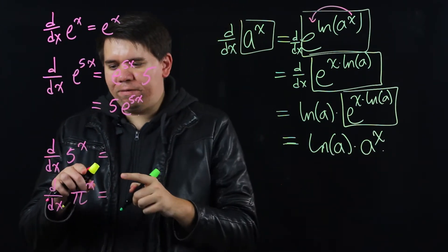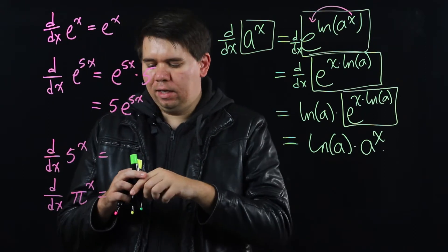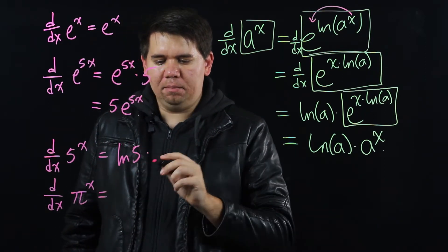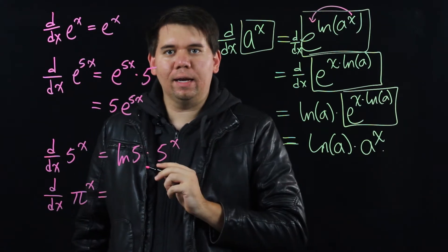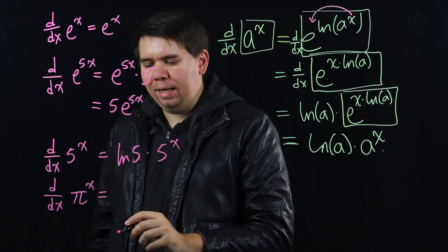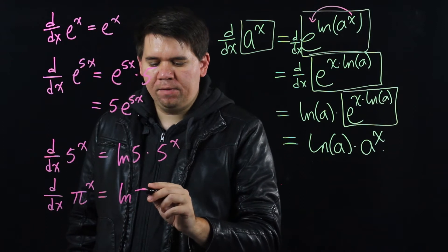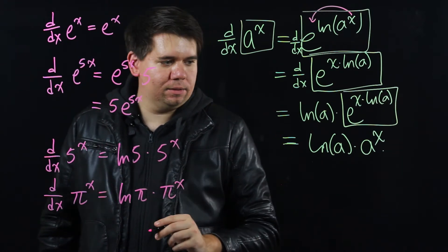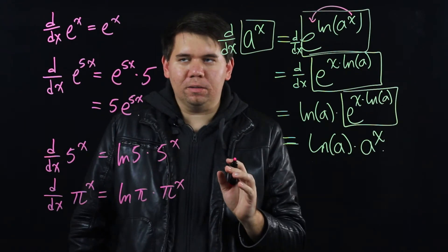That is it's claiming if you had a function like 5 to the x. Its derivative should just be ln of 5 times 5 to the x. Or if you have a function like pi to the x. Its derivative should just be ln of pi times pi to the x.